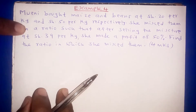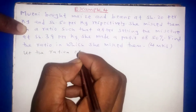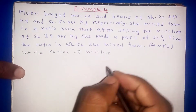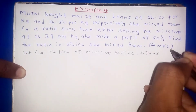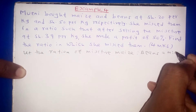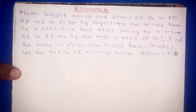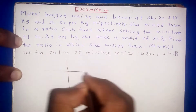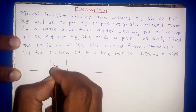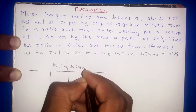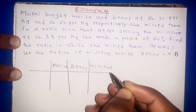We start by letting the ratio of the mixture — that is maize to beans — be M to B, where M and B represent the ratio of maize to beans respectively. We set up our usual table: we have maize, then beans, then lastly the mixture or blend.